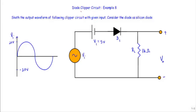In this video I will show you an example of a clipper circuit - this will be example number 8. We will sketch the output waveform of a clipper circuit with a given input, considering the diode as a silicon diode. In this circuit we are applying a sinusoidal input with a positive maximum of plus 20 and a negative maximum of minus 20 volt. The output is taken across RL of 1 kilo ohm.